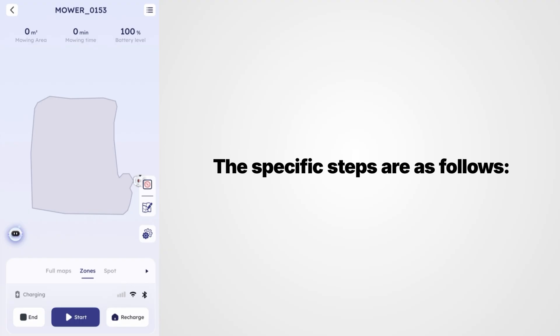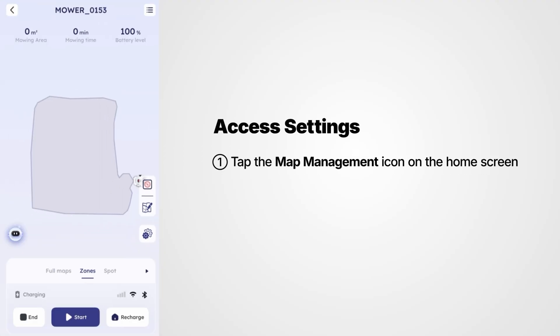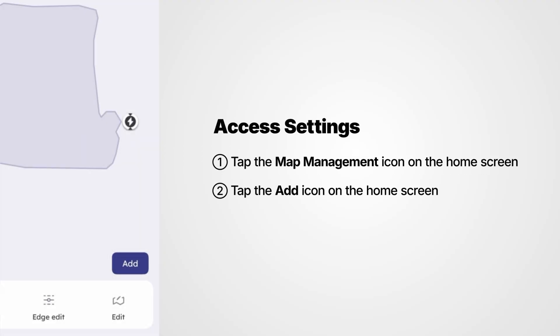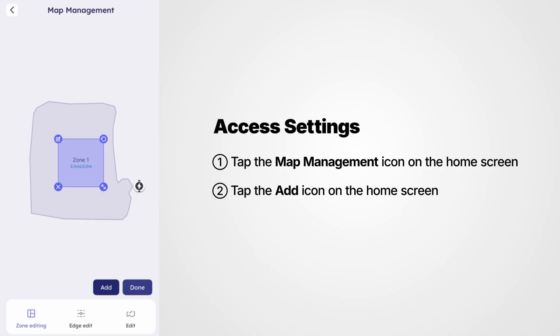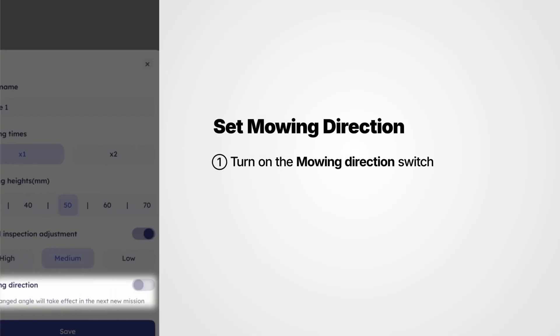The specific steps are as follows. Tap the Map Management icon on the home screen. Tap the Add icon on the home screen. Turn on the Mowing Direction switch.